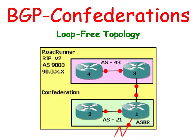BGP Confederations are used to break up the number of full meshes. Each confederation can have its own group of administrators to oversee it. In this example, we only have four routers, but they can represent thousands of routers. Confederations were designed to make administration easier for autonomous systems with thousands of routers, as well as reduce the number of network connections needed.